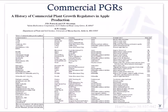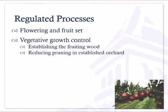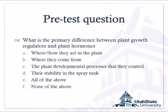There are many different commercial plant growth regulators used in apples — a review article listed two pages of them — but they all fall into one of those themes we talked about. The processes we use plant growth regulators to regulate include: flowering and fruit set, vegetative growth control, fruit abscission, and fruit characteristics.